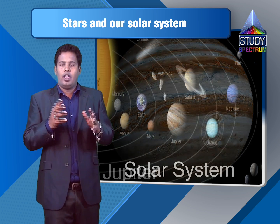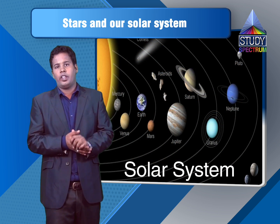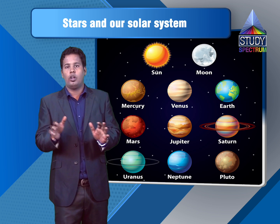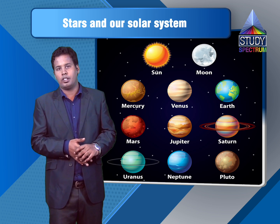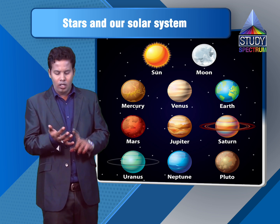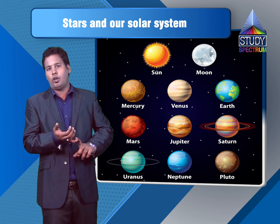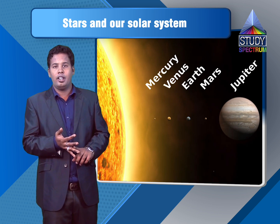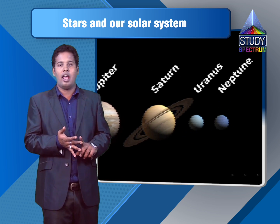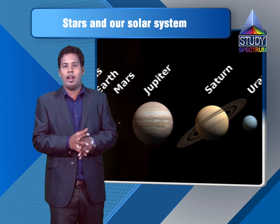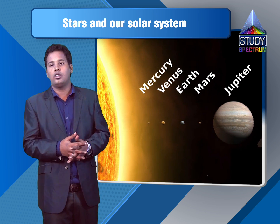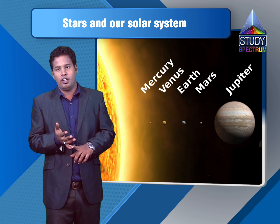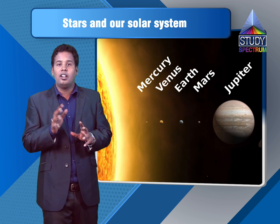In our solar system, the sun is the star, and we have eight big planets and a few dwarf planets like asteroids and comets. Starting from the nearest point to the sun, the eight planets are: Mercury, Venus, Earth, Mars, Jupiter, Saturn, Uranus, and Neptune. The first four planets — Mercury, Venus, Earth, and Mars — are called terrestrial planets, as they are the inner planets, closer to the sun, and primarily composed of rock and metal.